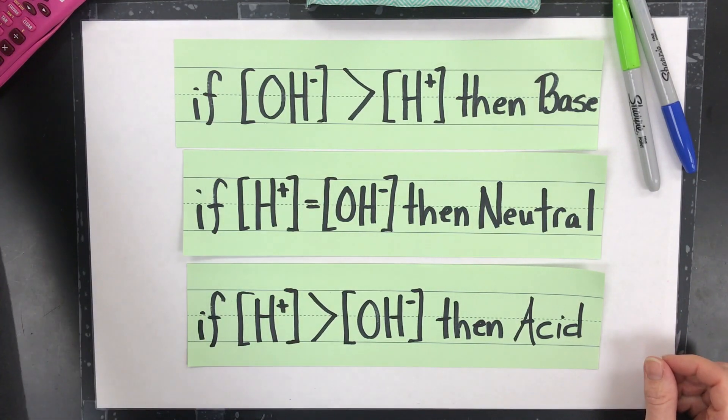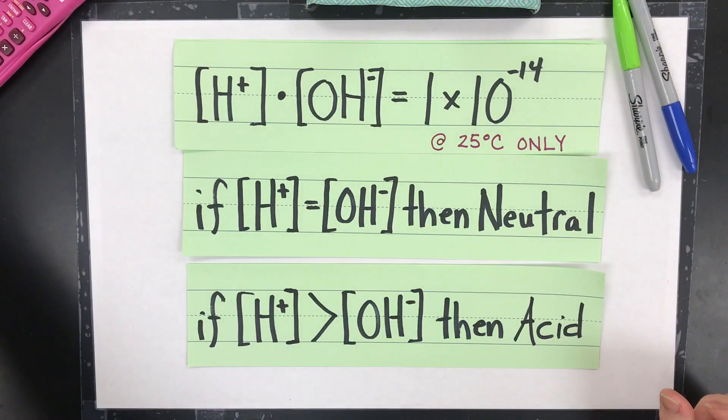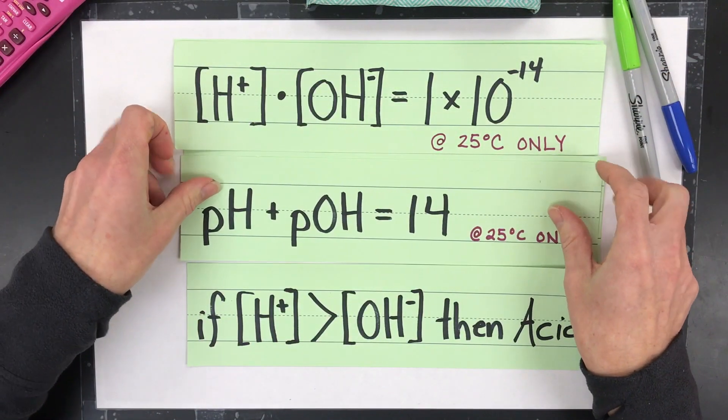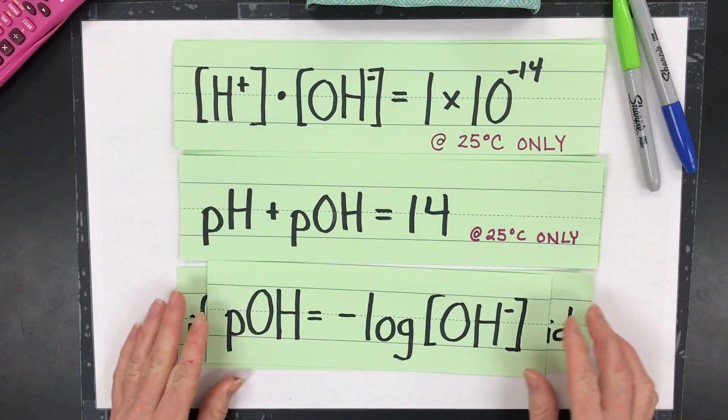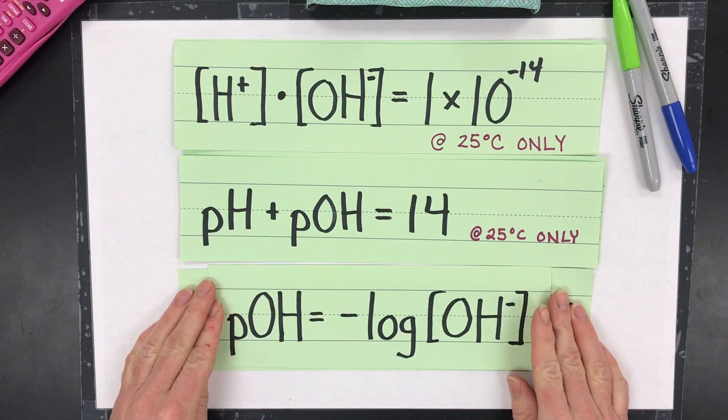However, when you're using these two formulas, this one and this one, those only work at 25 degrees. And the most common way to start the problem, in my opinion, is to use this one where you start with pOH.